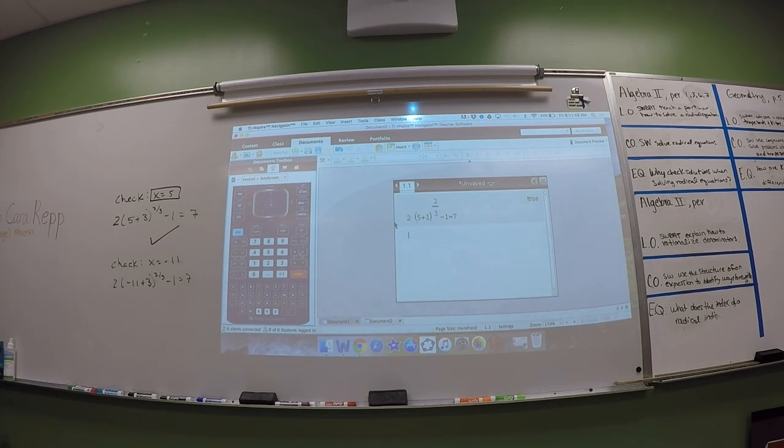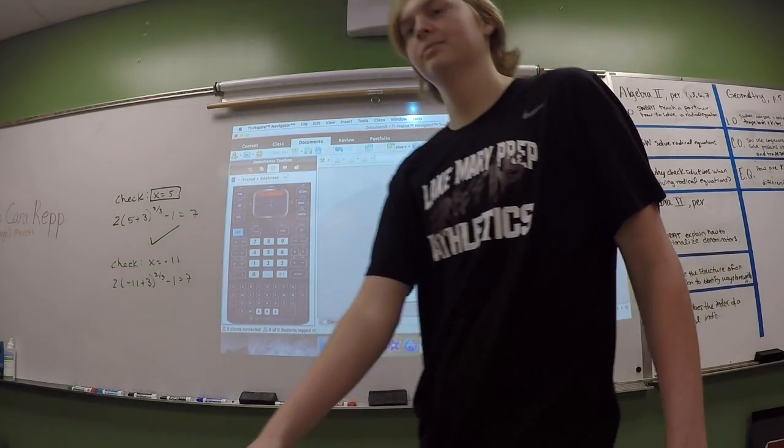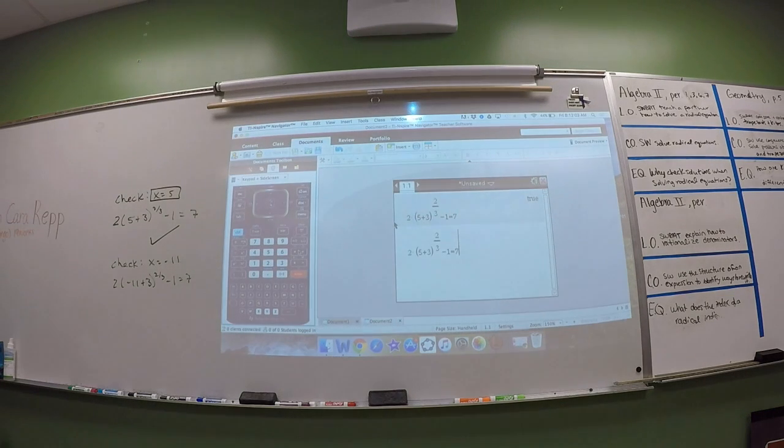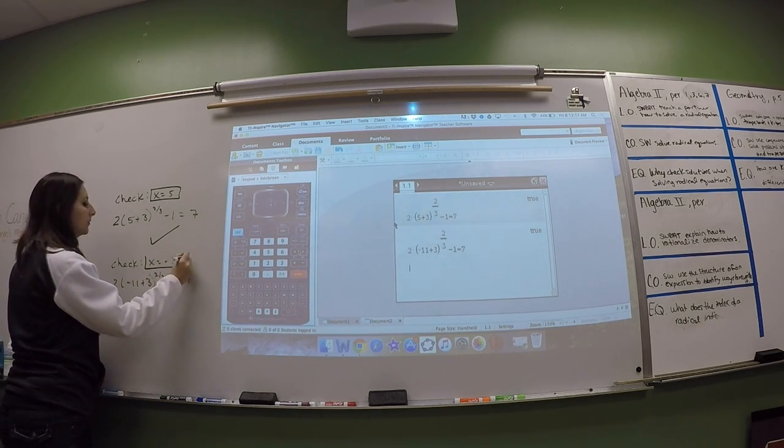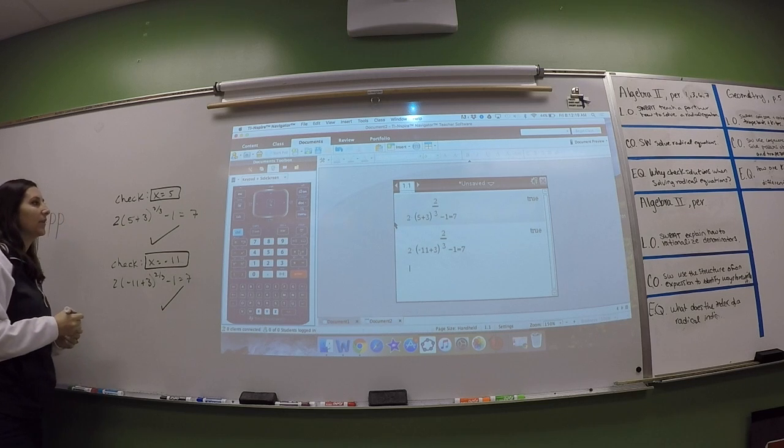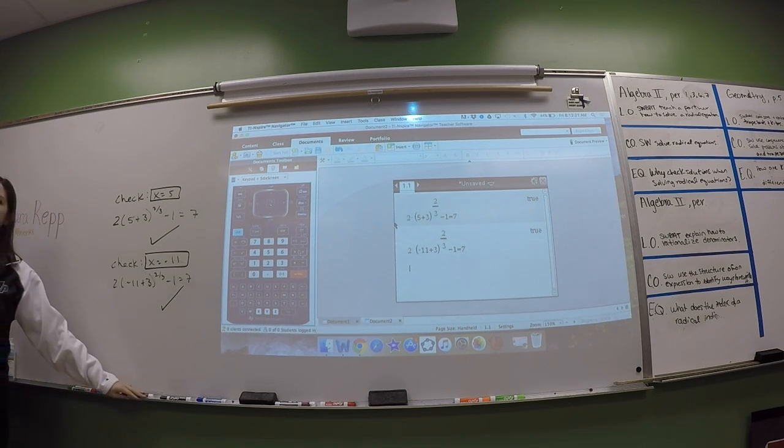All right, so now we're going to check the other one. Here's a quick way to check the other one. Hit the up arrow twice so that it is highlighting what you just typed in. You do not need to type this in again. You just highlight it and click enter. Then you go back to where 5 is, delete 5, and type in negative 11, and then hit enter. And it says true, so that one is also true. So you have two solutions, negative 11 and 5.